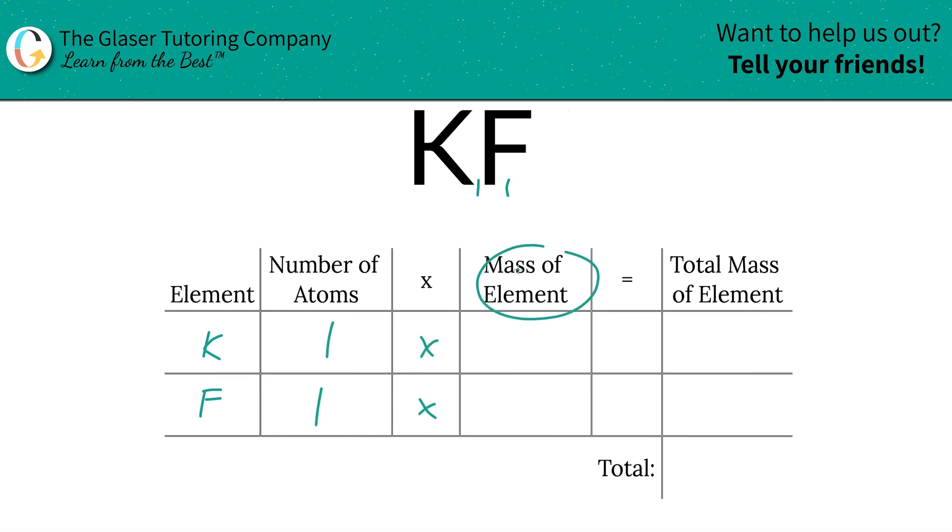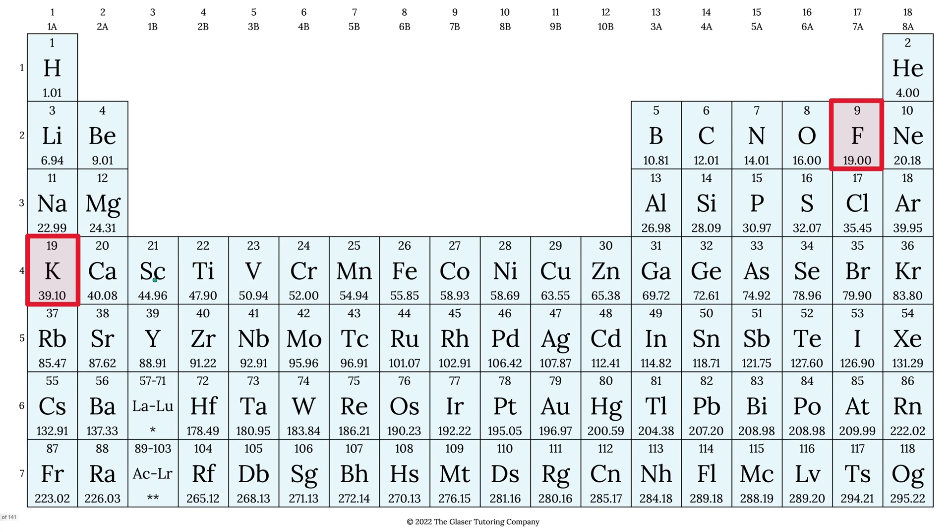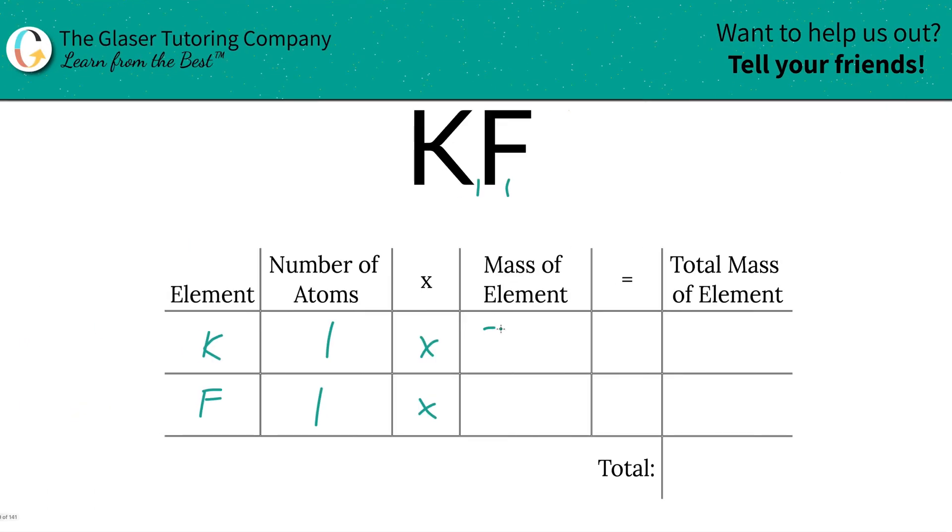Then we're going to multiply those numbers of atoms by the mass of the elements. That's where the periodic table comes into play. So potassium is 39.10, fluorine is 19. This is 39.10 and this is 19.